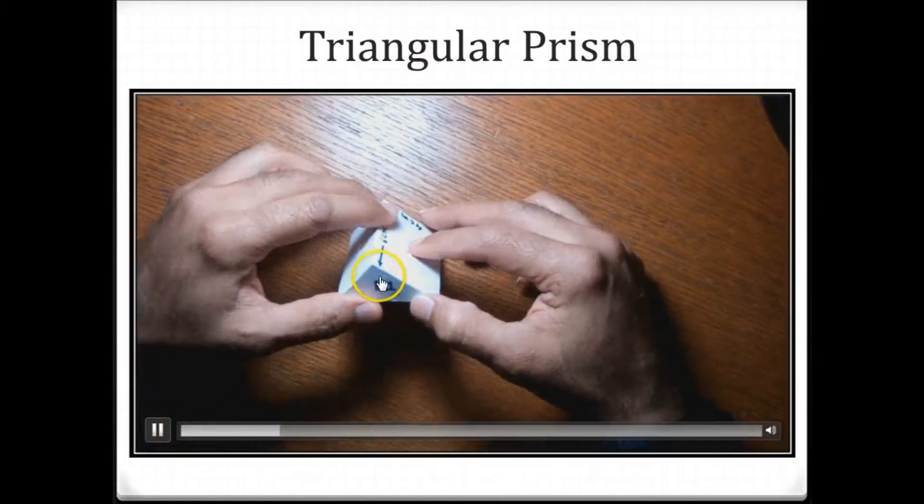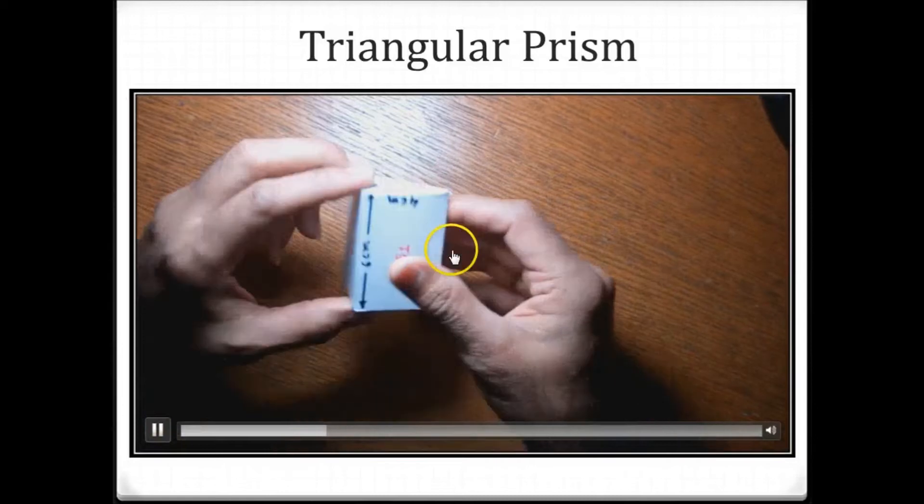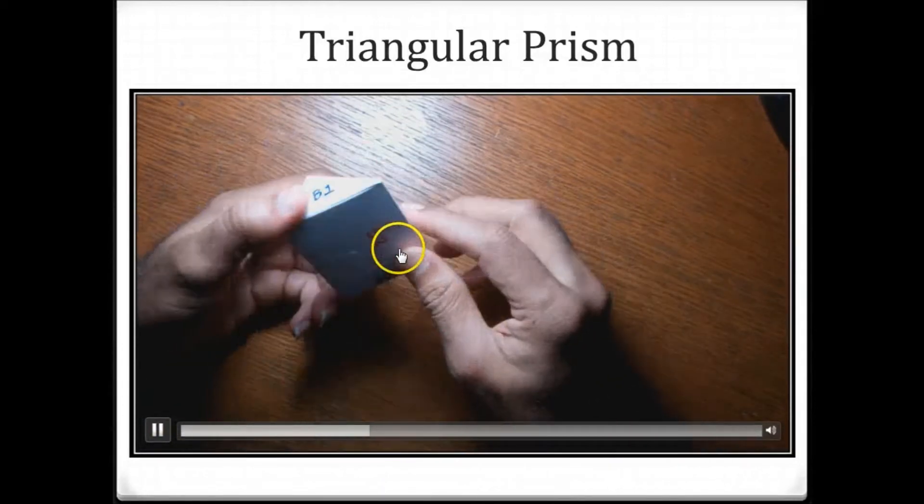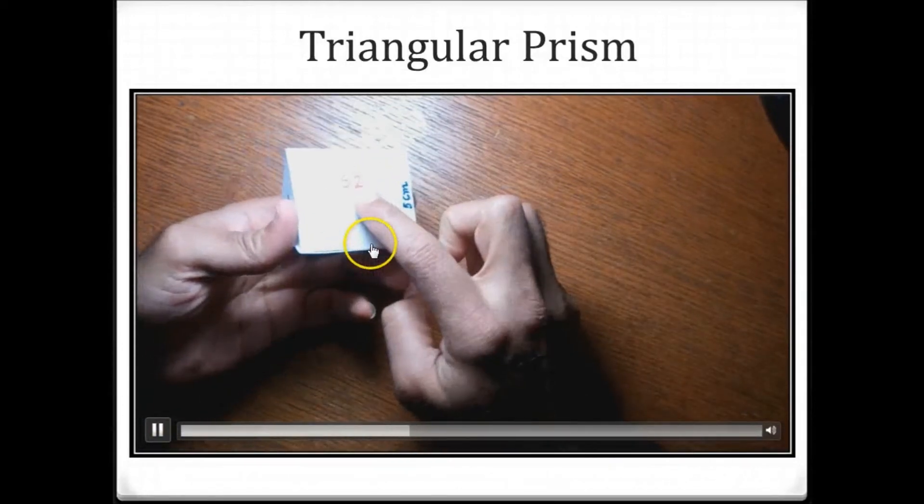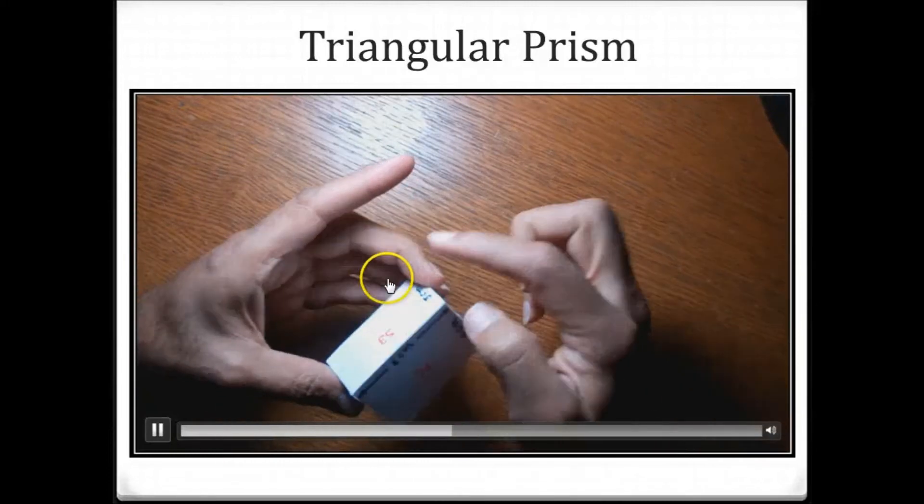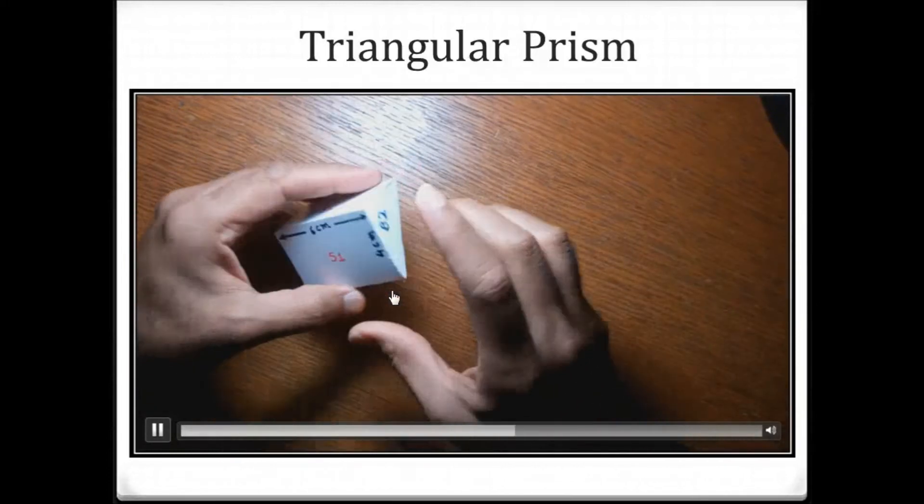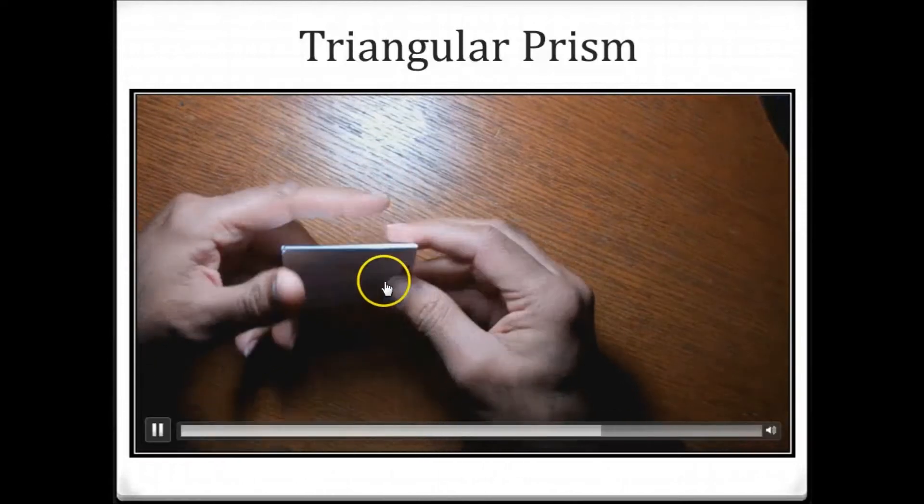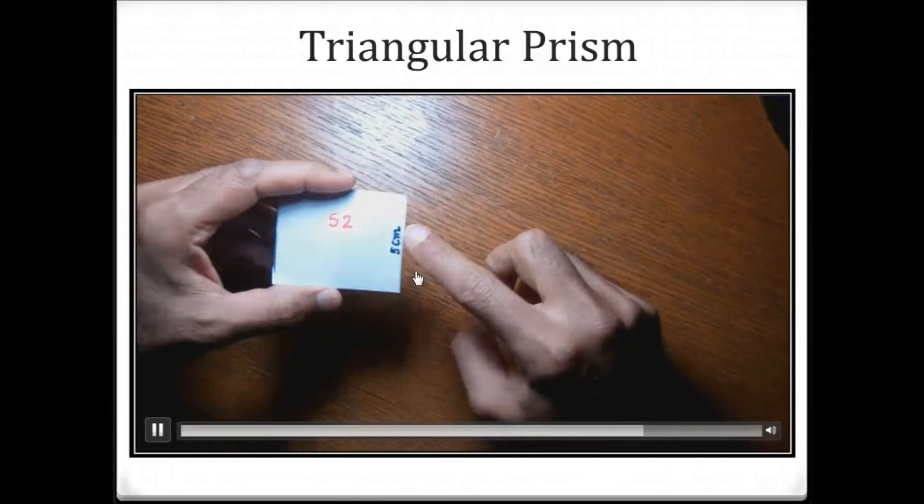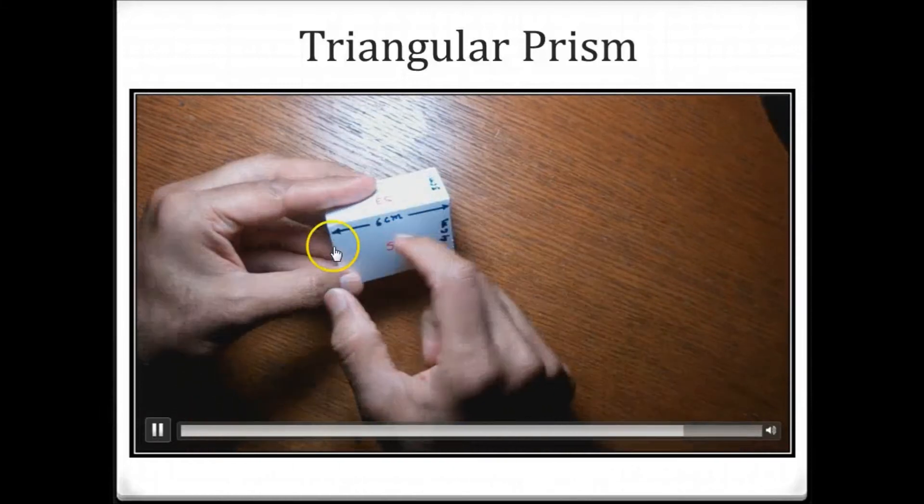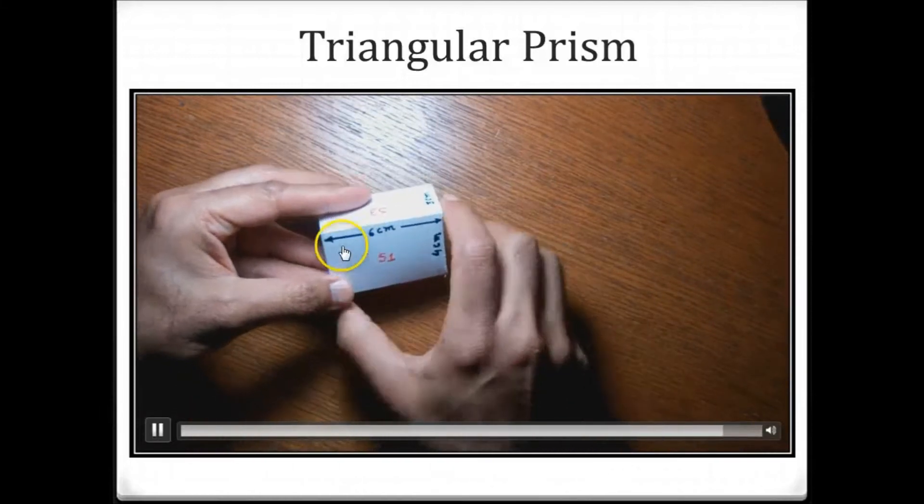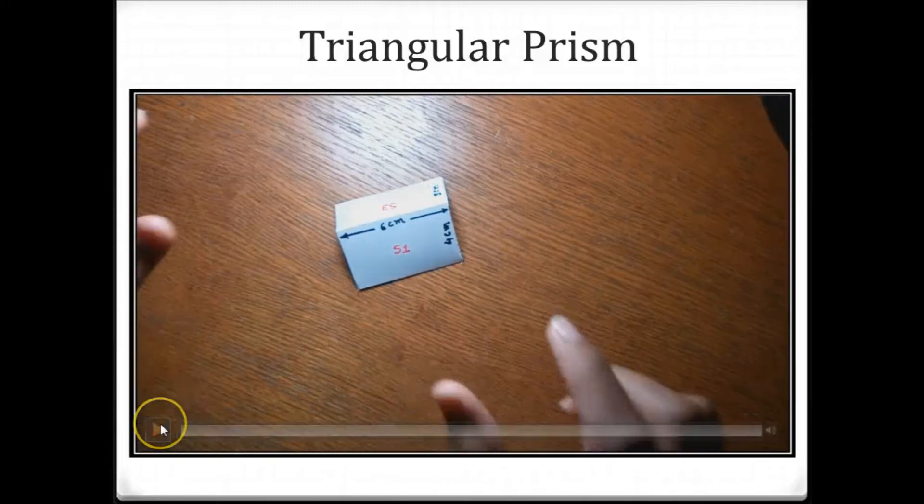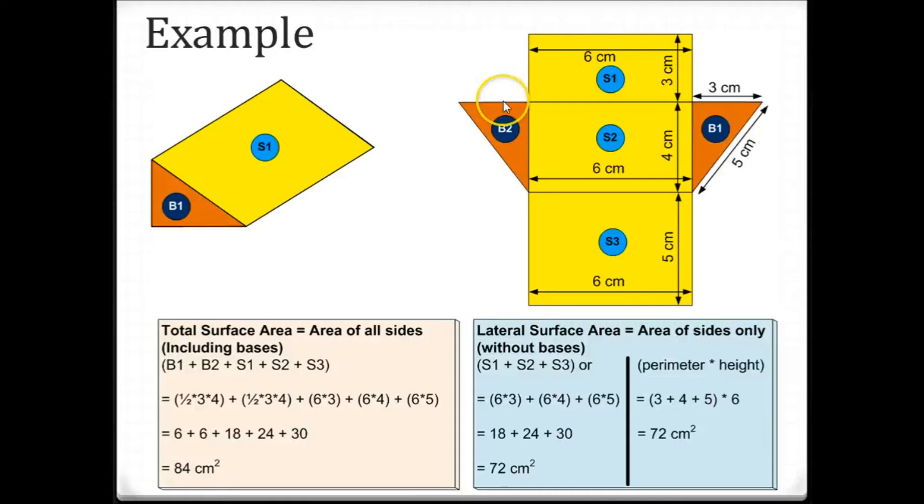It has two bases, b1 and b2, and three surface areas: s1, s2, and s3. So total, five sides are there. The dimensions of this triangular prism are 3 centimeters, 4 centimeters, and the other side is 5 centimeters. And the length is 6 centimeters here.